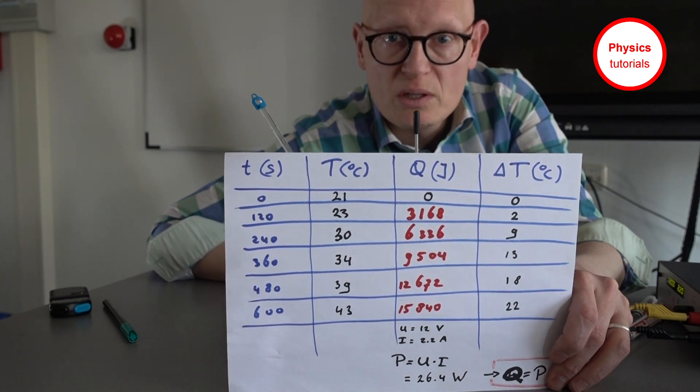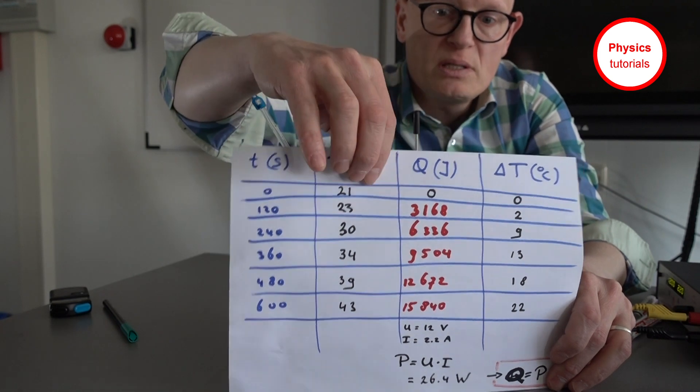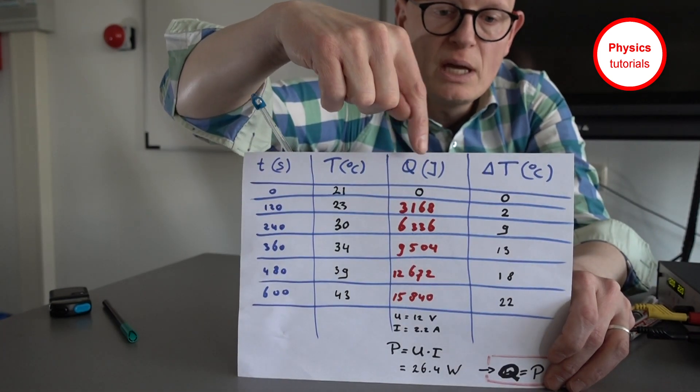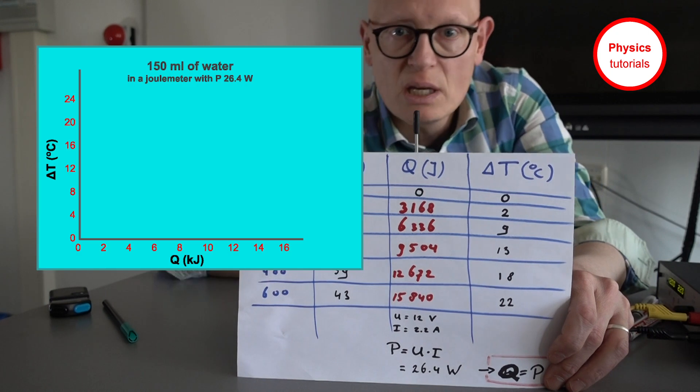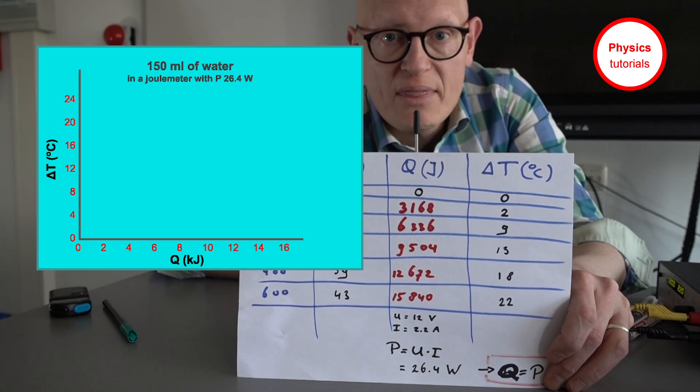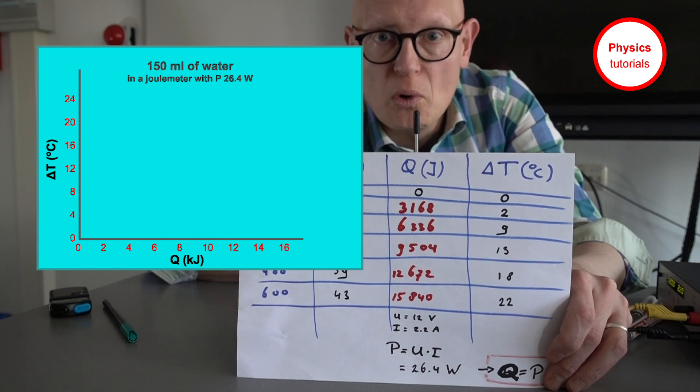But what you can also do is put the quantities heat energy and temperature rise in a graph. Then you will be able to answer the research question much more accurately. Now try to answer the further research questions in your reader on pages 26 and 27, and create a graph of these results with help of the assignment in Google Classroom.